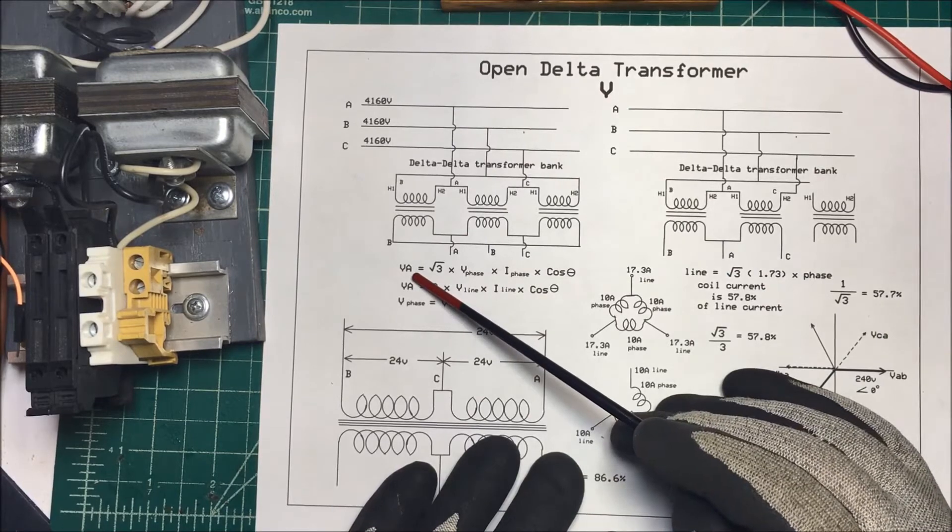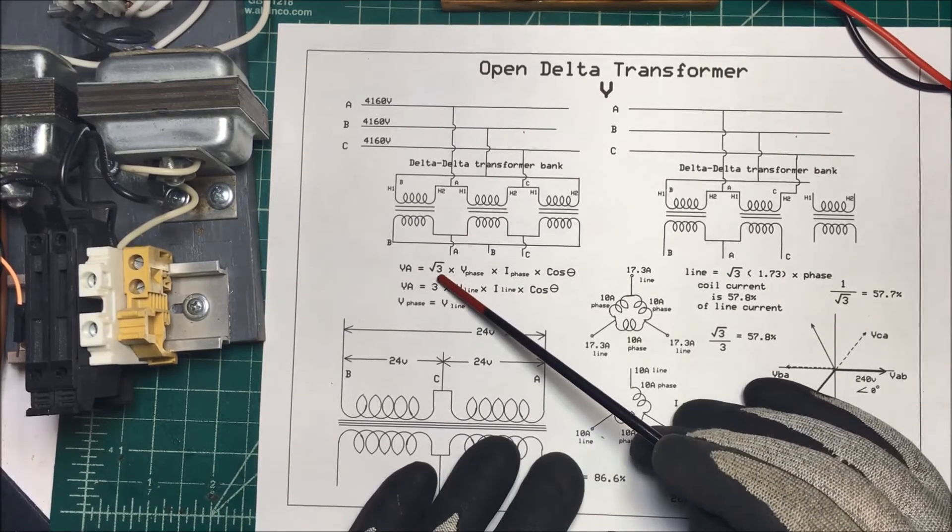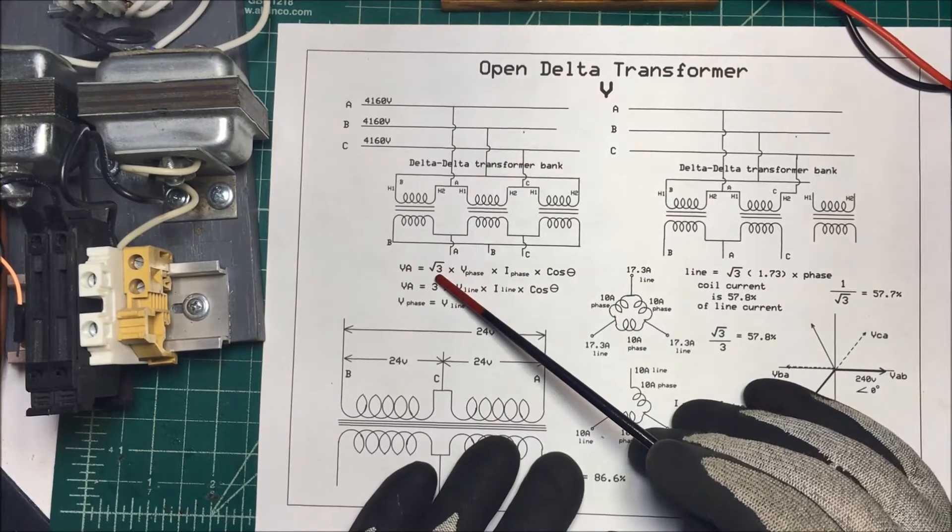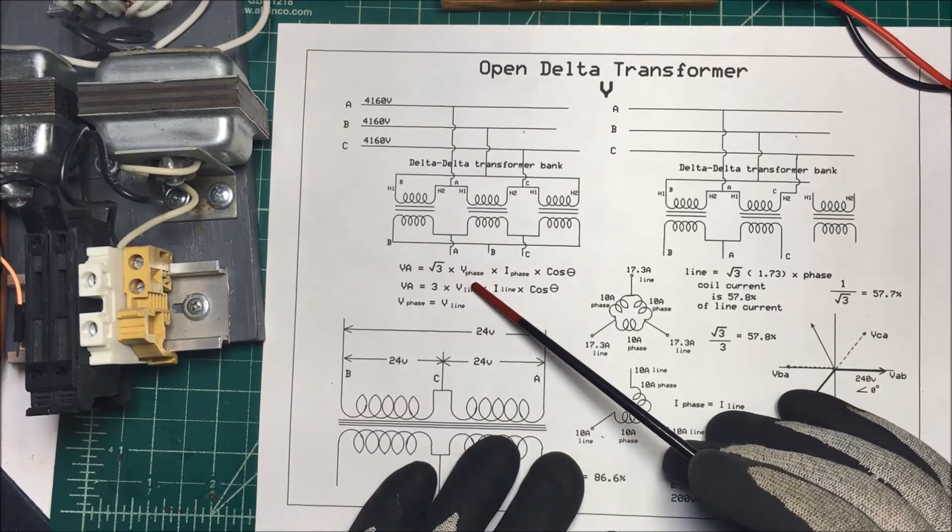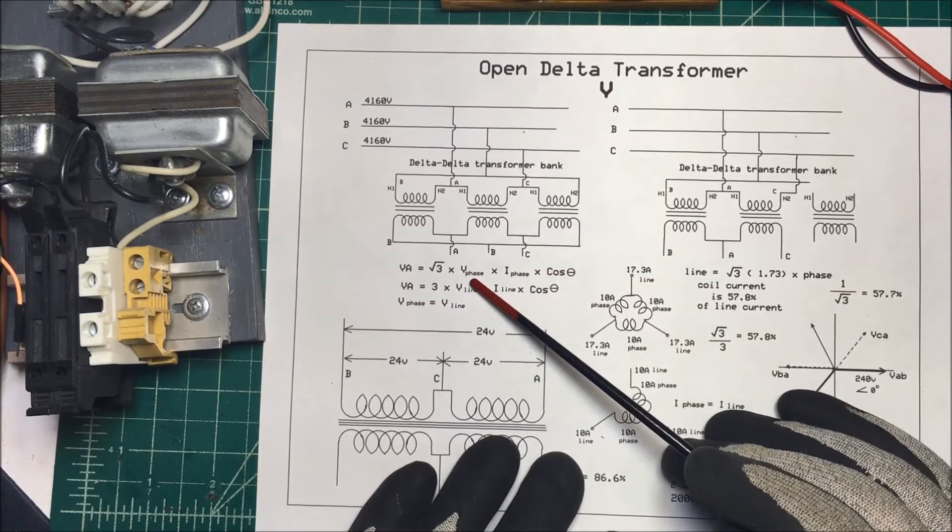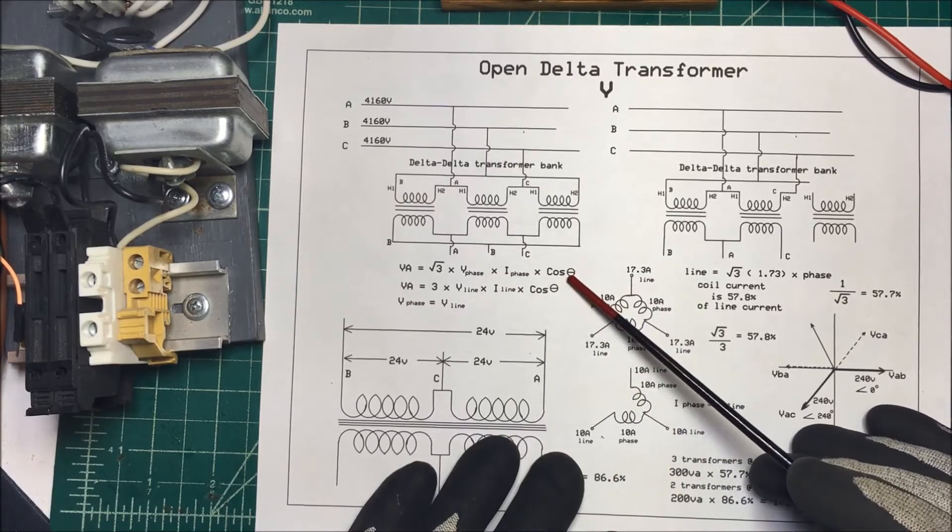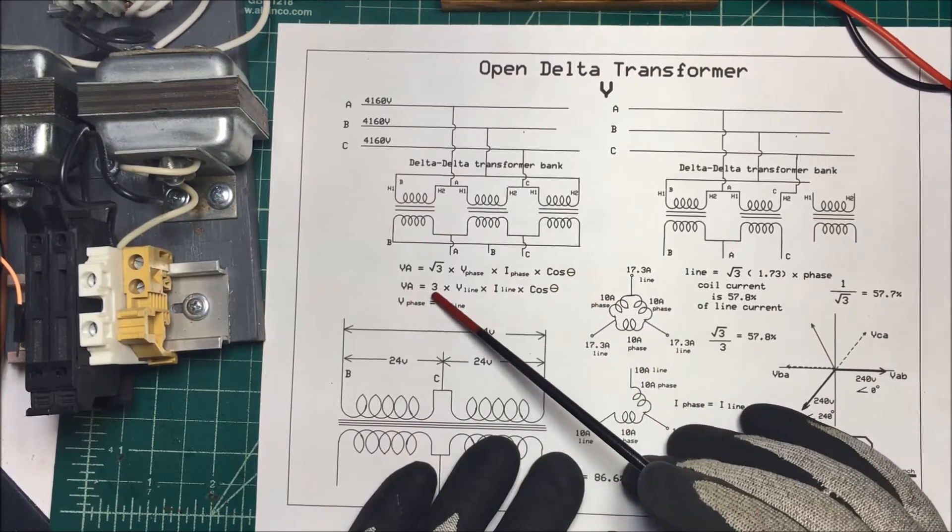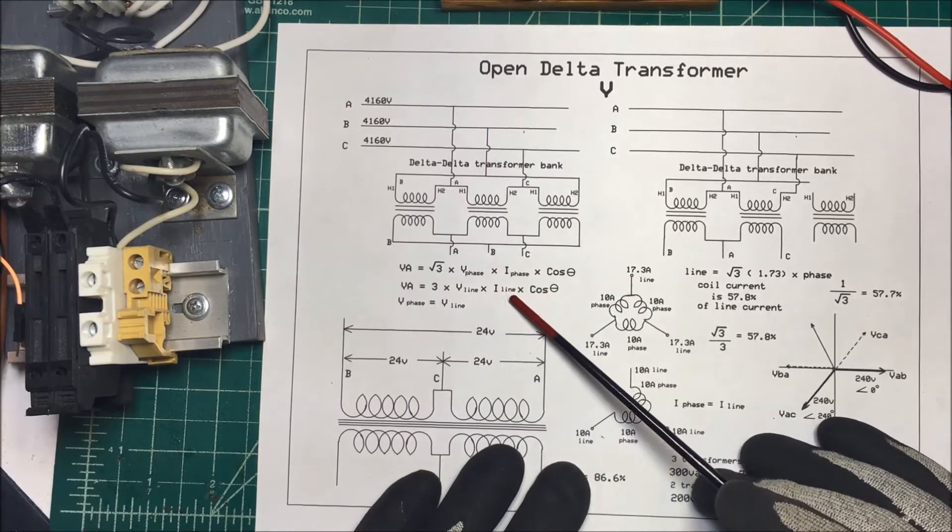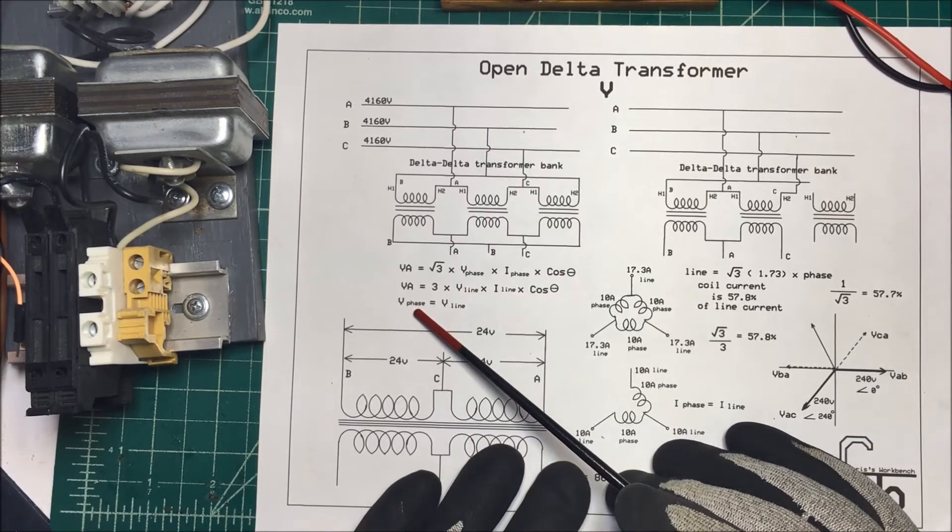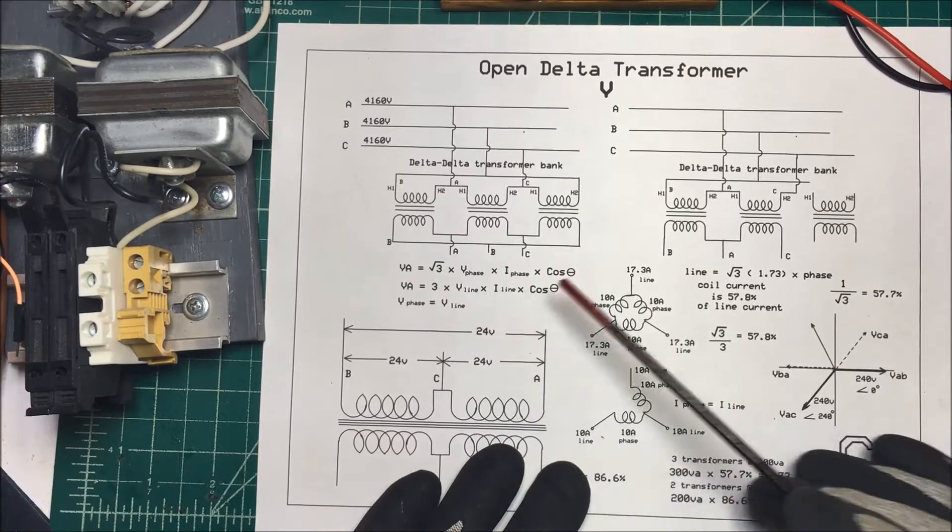To find your wattage or your VA, you take the square root of three, which is 1.73 times the phase voltage times the phase current. Of course, you put in your power factor there. Or you can take just three times the line voltage times the line current. Now the voltage and the phase and the voltage in the line are the same.